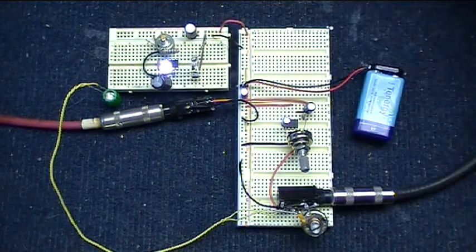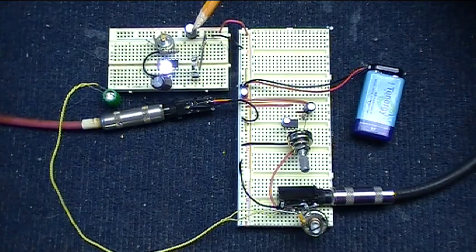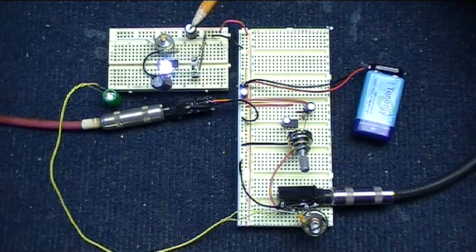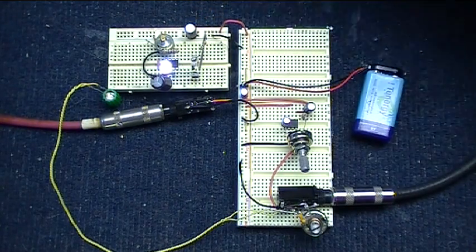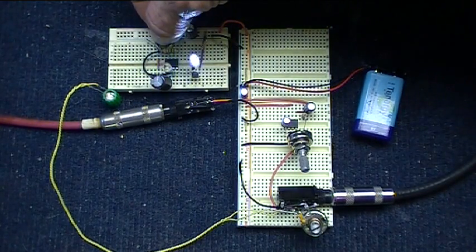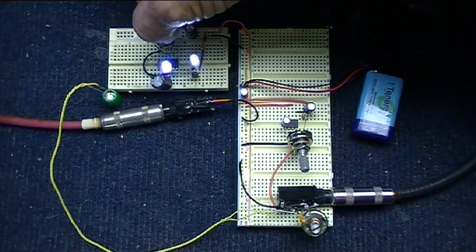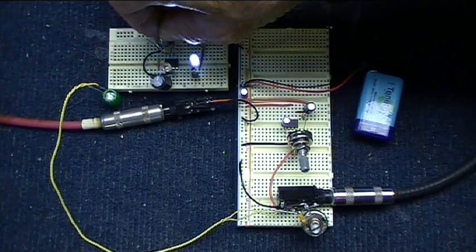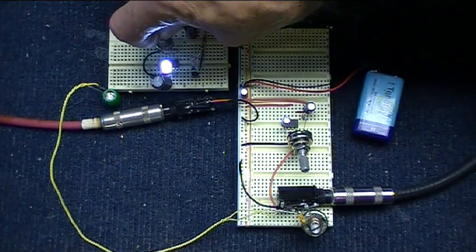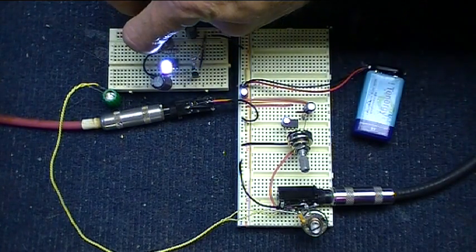Over here on this board is a 555 timer set up in astable mode, and I've got a potentiometer here so I can change the pulse width coming out of the 555 pin 3. As I turn it up, you see the LEDs flash a little faster, and as I slow it down they go slower.